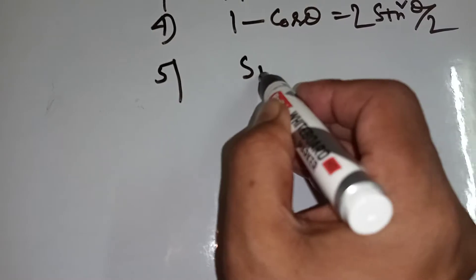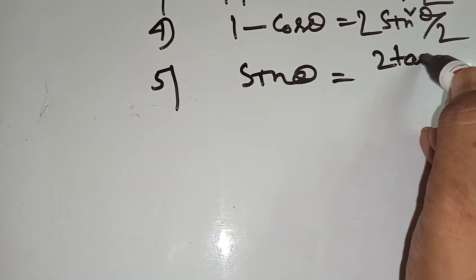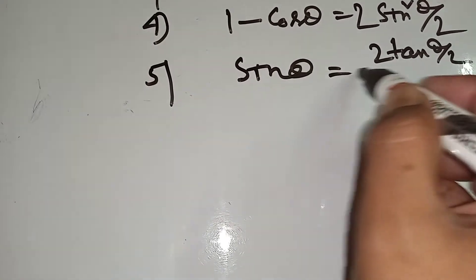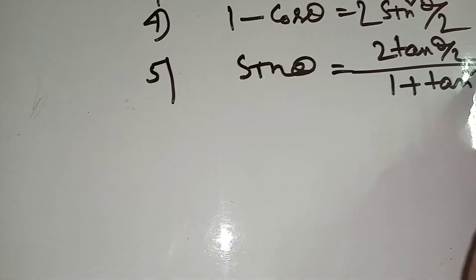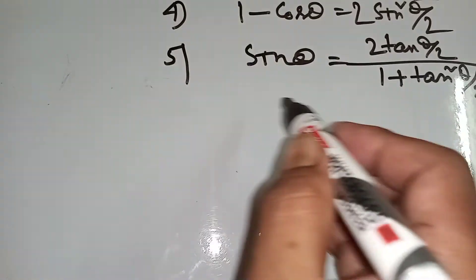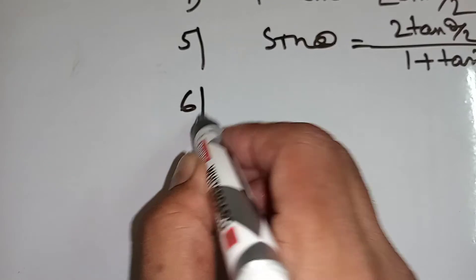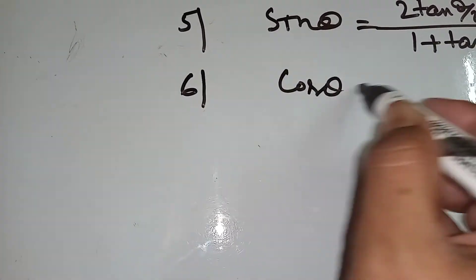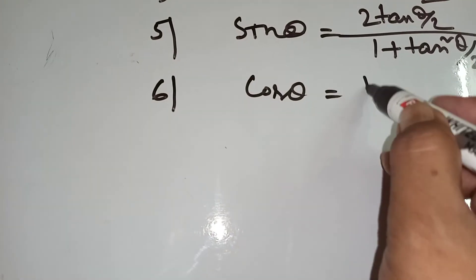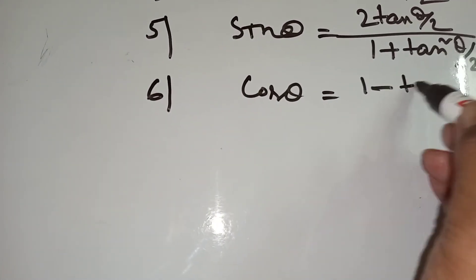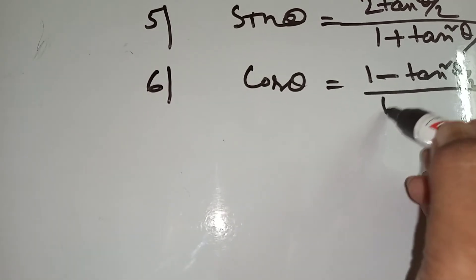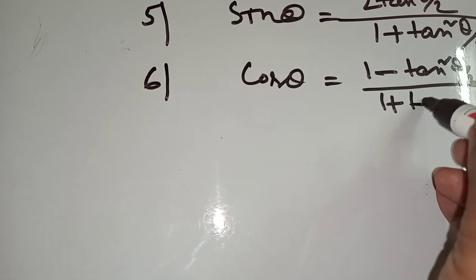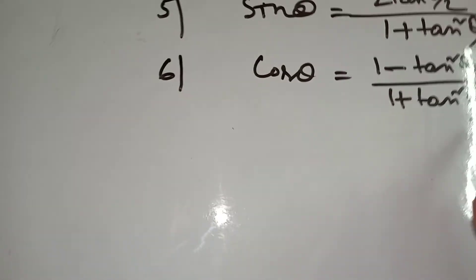sin theta equal to 2 tan theta by 2 by 1 plus tan square theta by 2. Cos theta equal to 1 minus tan square theta by 2 by 1 plus tan square theta by 2.